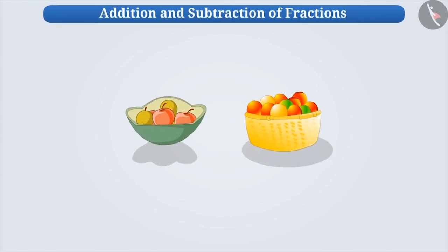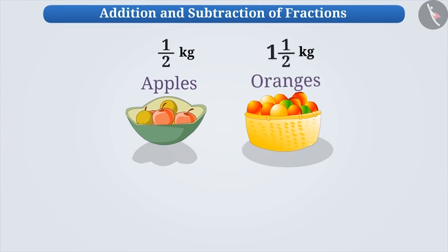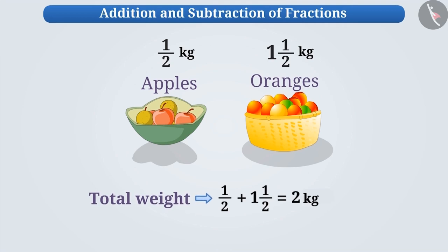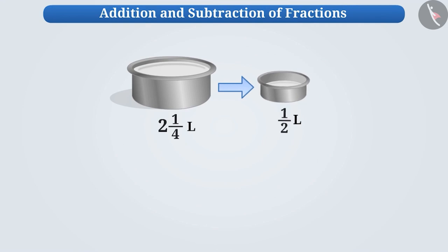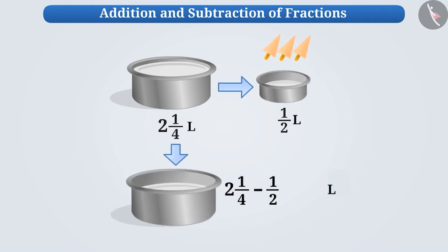We do addition and subtraction of fractions every day. For example, if you buy half a kg of apples and one and a half kg of oranges, then the total weight of fruit will be two kgs. Suppose you have two and a quarter liters of milk, out of which you made kulfis with half a liter, then the remaining milk is one and three fourth liters.